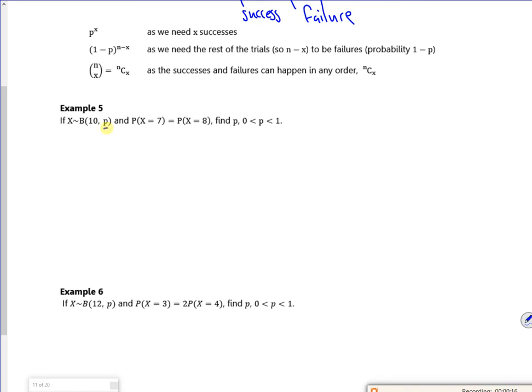So the probability is the same and I've got to find P. So the probability that X equals 7 will be 10c7, P to the power of 7, and then 1 minus P cubed. The probability of X is 8 will be 10c8, P to the power of 8, and then 1 minus P squared.